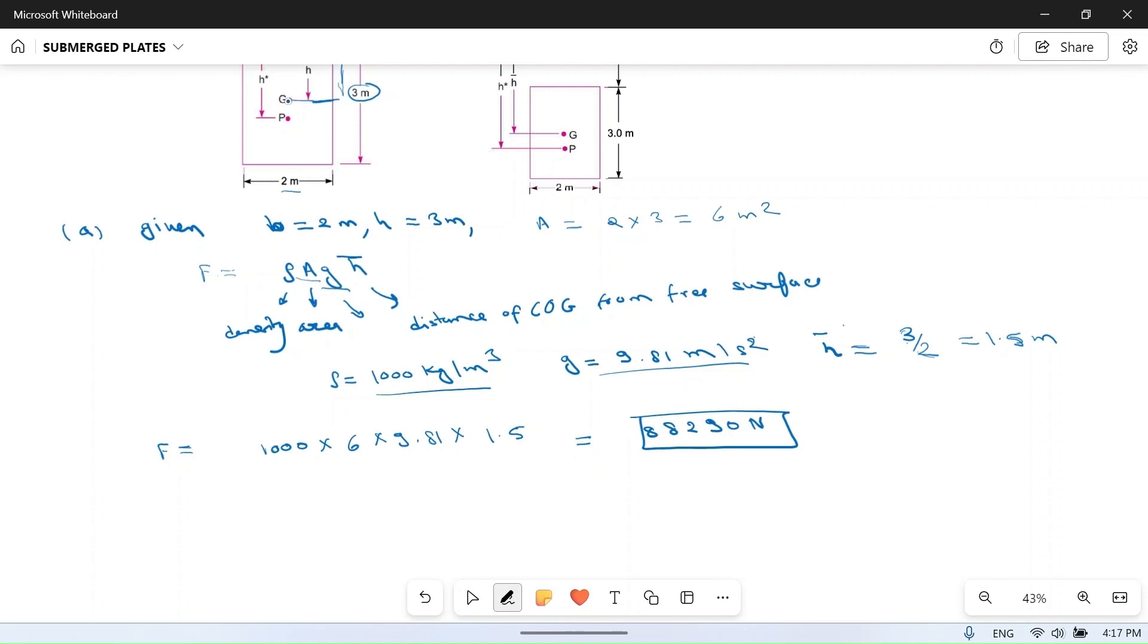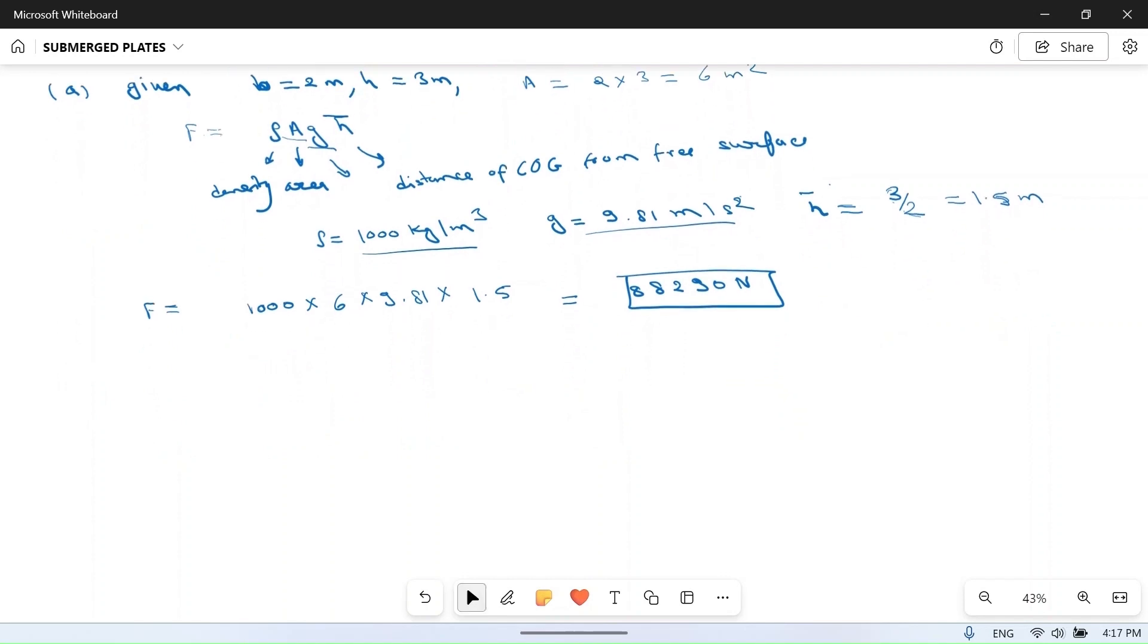But where is this pressure acting? This pressure will not act at the center of gravity, but it will act on the center of pressure. So what is the center of pressure? Depth of center of pressure is given as: h* = Ig/(A·h̄) + h̄, where Ig is moment of inertia around center of gravity.